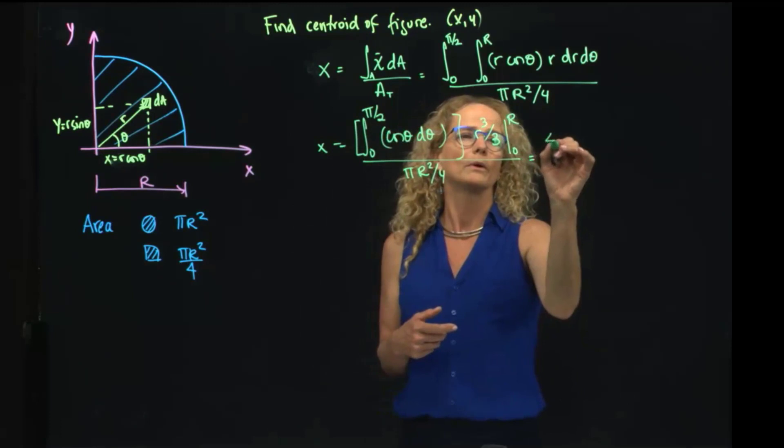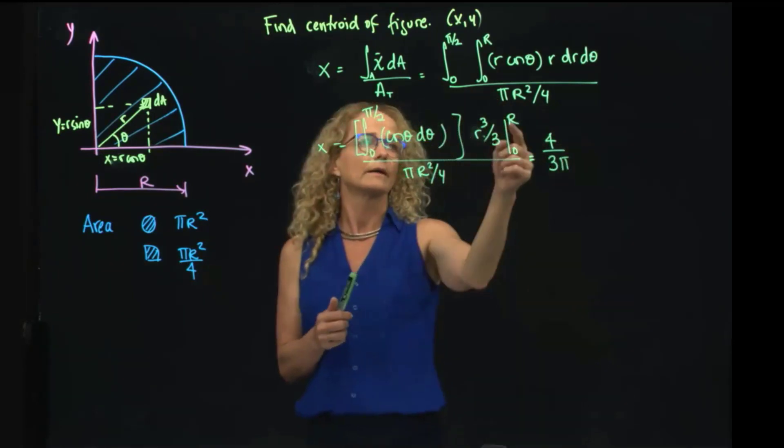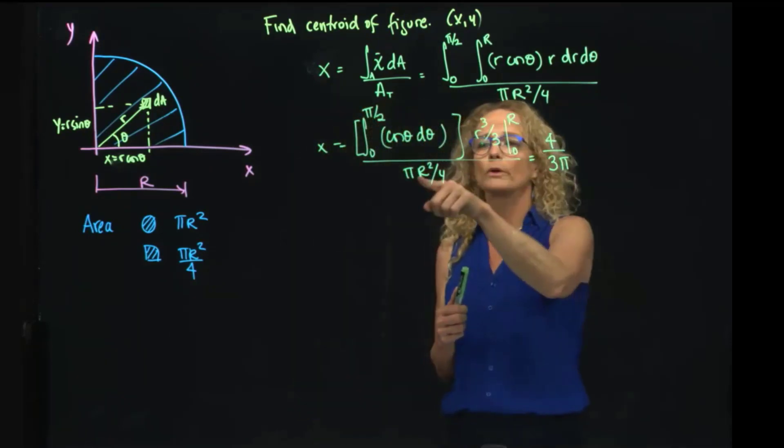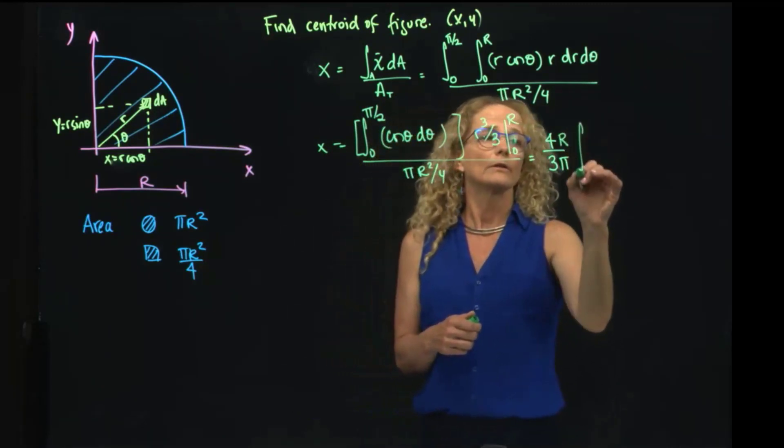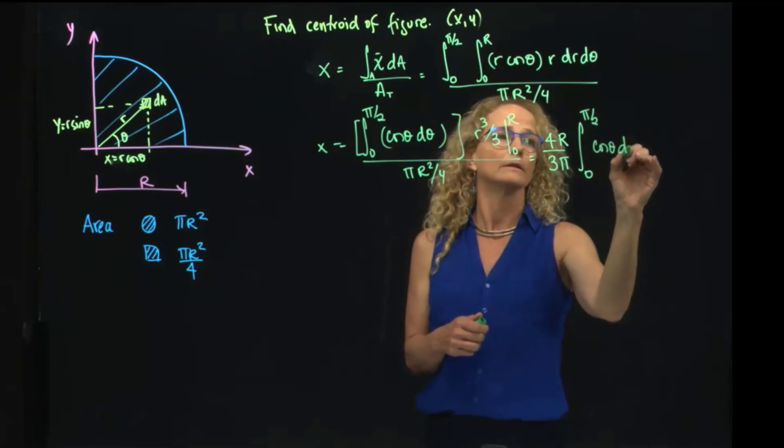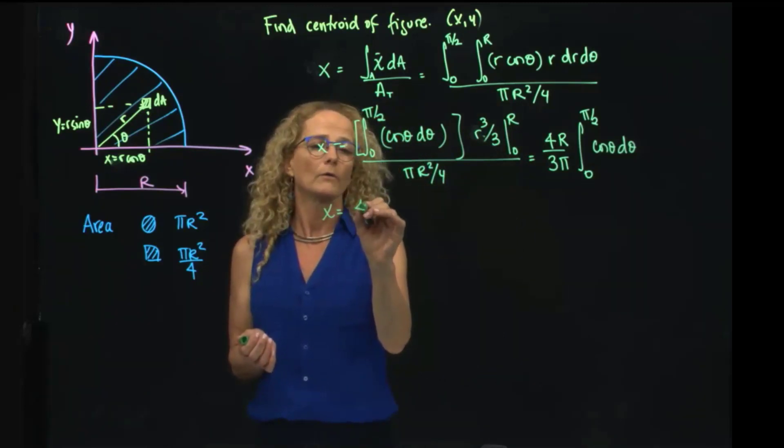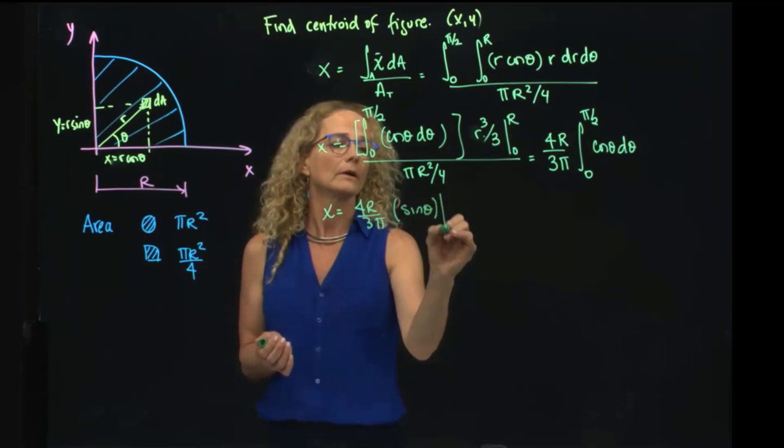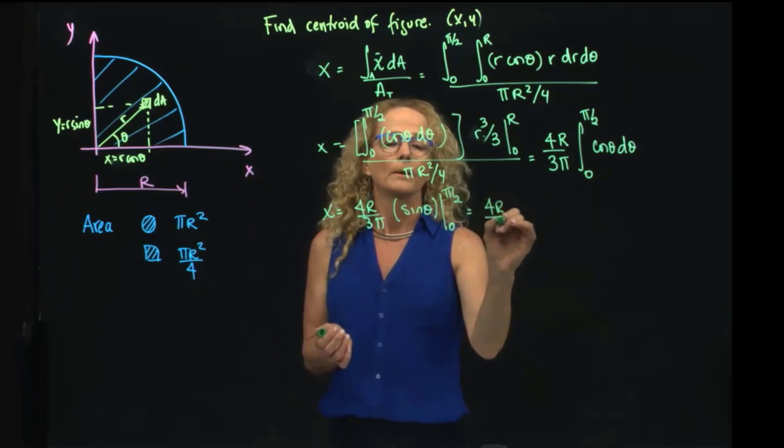And I will see that once I evaluate that r, I can cancel one of the r cubed divided by r squared, I get r, and then I have the integral from 0 to pi half of cosine of theta dtheta. The integral of cosine is sine, therefore I have 4r over 3 pi sine of theta evaluated between 0 and pi half.